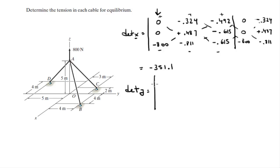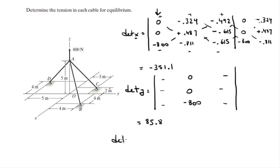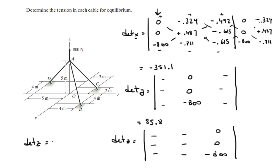For the determinant of y, rewrite the main coefficient matrix but replace the second column with the right-hand side constants; going through the same diagonal process gives a determinant of -52.2. Then replace the third column for the determinant of c, and after going through the same motions you get -343.86.